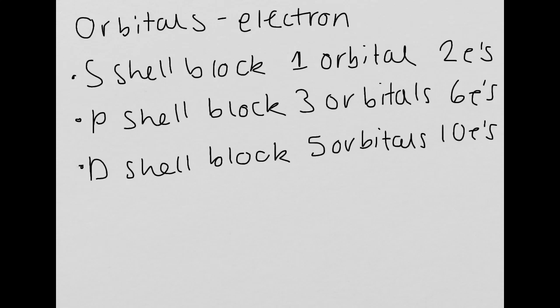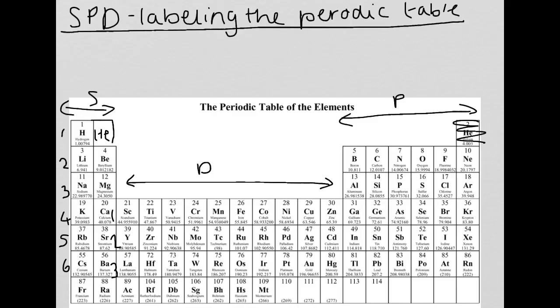Going back to the periodic table: this is the S shell and there are two electrons. This has one electron and that has two electrons. Then we go over to 2S — two electrons; 2P — six electrons; 3S — two electrons; 3P — six electrons.